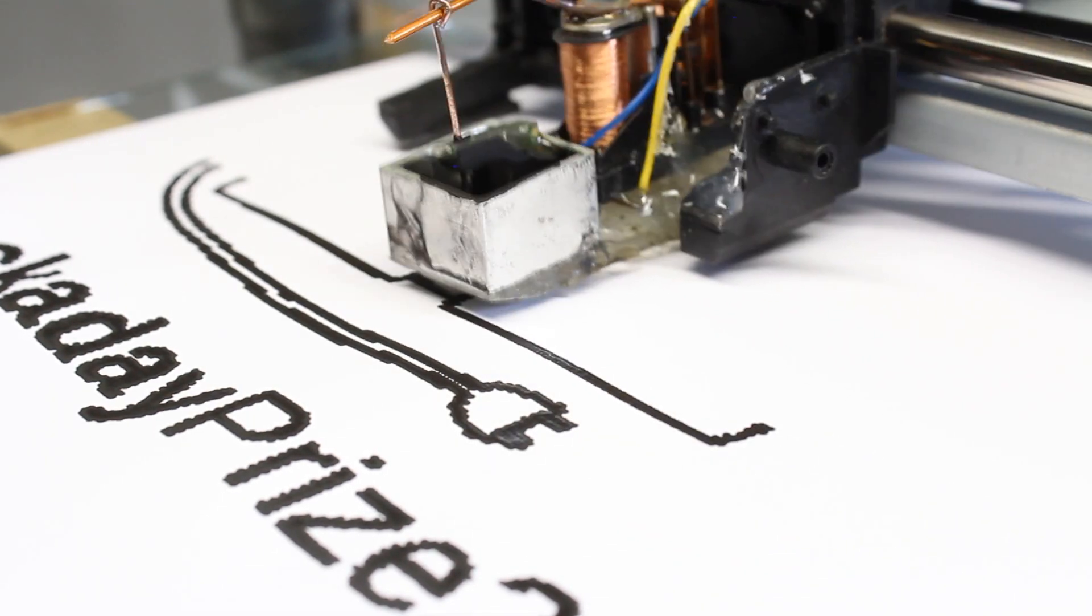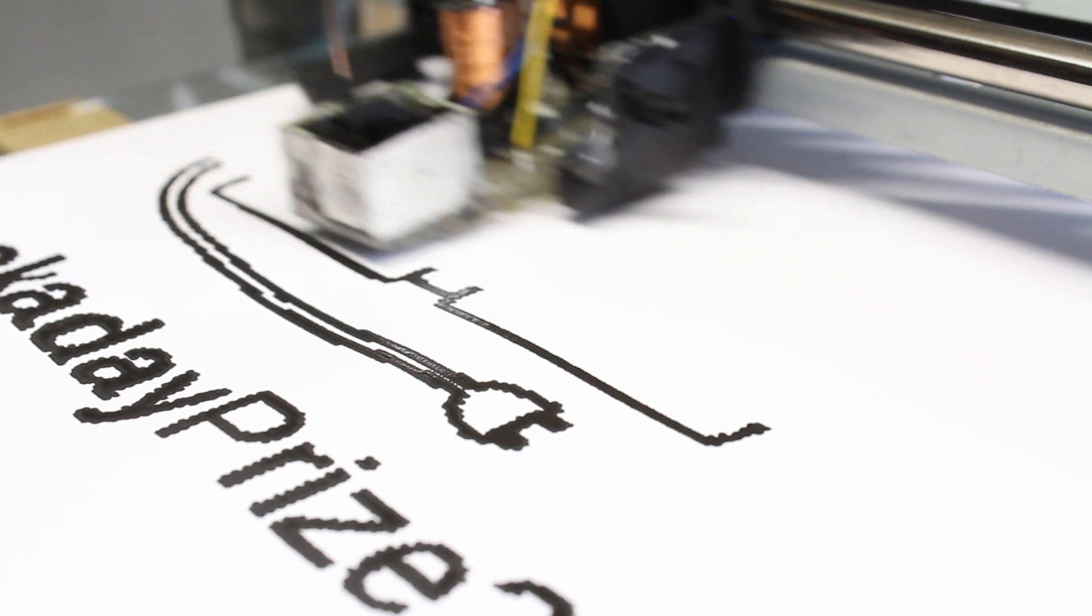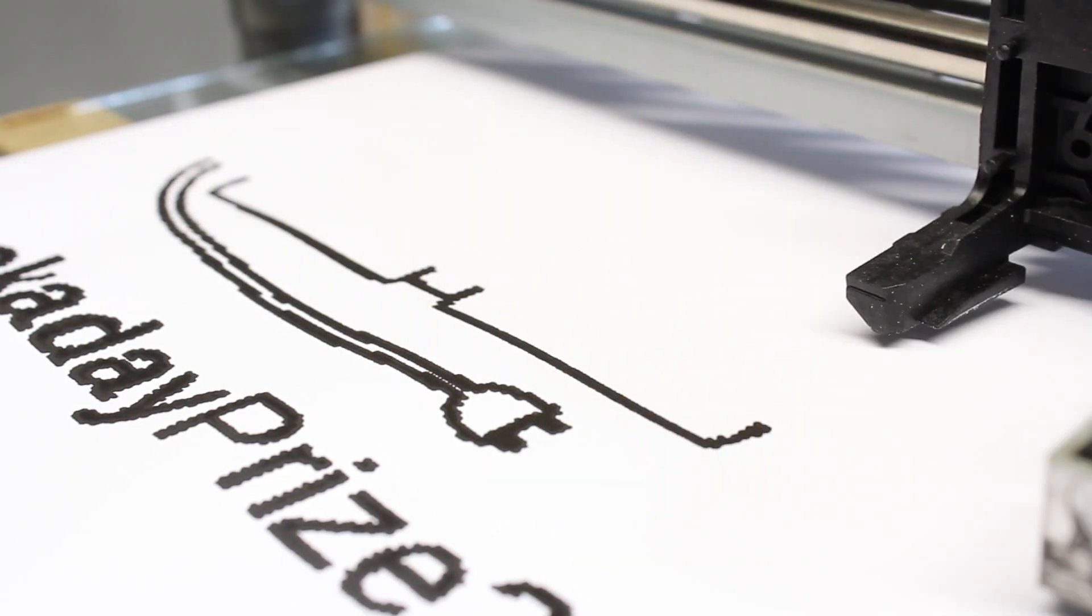Each dot has a diameter of approximately 1mm, thus the resulting resolution is 25 dots per inch.